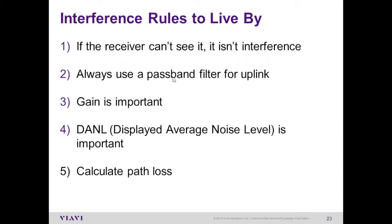If it's not part of your system and you need to chase down external sources of interference after doing everything possible to maintain best signal quality—good grounding, good antenna placement, no PIM, no other issues—there are five rules to live by. Rule one: if the receiver can't see it, it's not interference. You'll find lots of sources within the spectrum of interest, but if they're not strong enough, they're not important. Always use a passband filter for uplink—the front end of the test instrument can be easily overdriven by downlink power when trying to chase down a low-powered emitter close to the cell site; you need a bandpass filter to attenuate that transmit power, otherwise you don't stand a chance. Gain is extremely important—we'll talk about it more. Familiarize yourself with your test equipment, setup, and settings. And ultimately, you need to calculate the path loss.